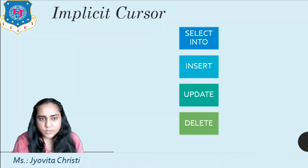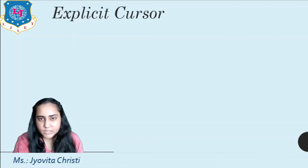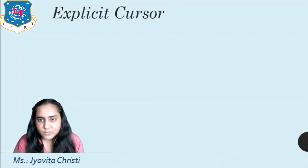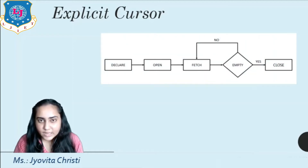Now let's look at explicit cursors. An explicit cursor in PL/SQL is a SELECT statement that is declared explicitly in the declaration section of the current PL/SQL block. For an explicit cursor you have to control the whole execution cycle — starting from open, fetch, and close — and Oracle defines an execution cycle, executes the SQL statement, and associates a cursor with it. You can see on your screens a diagram showing exactly how an explicit cursor works in PL/SQL.